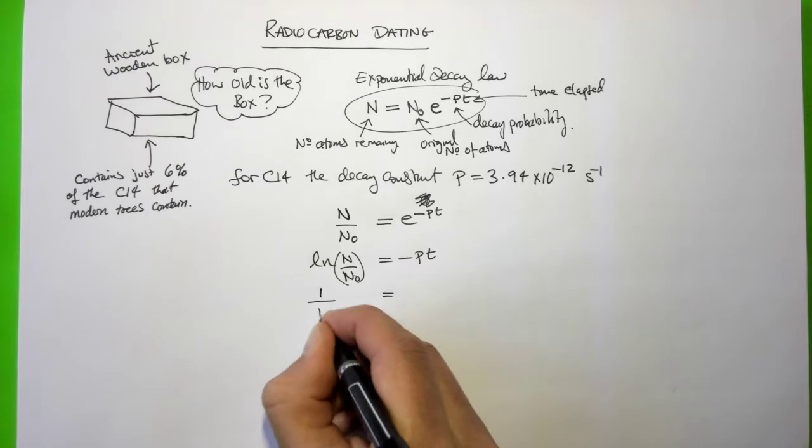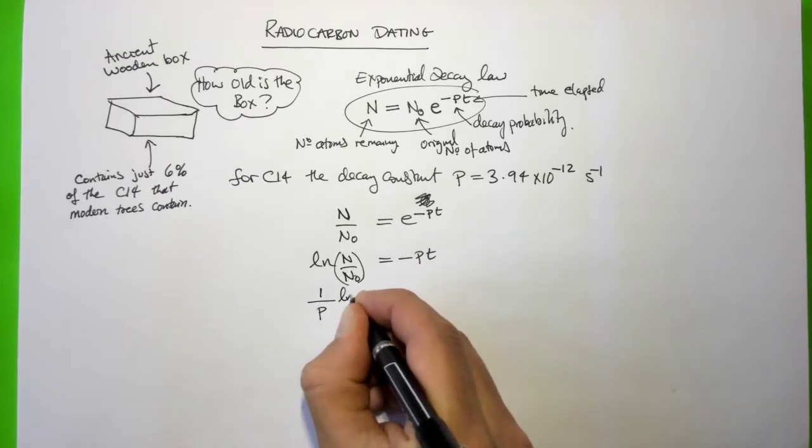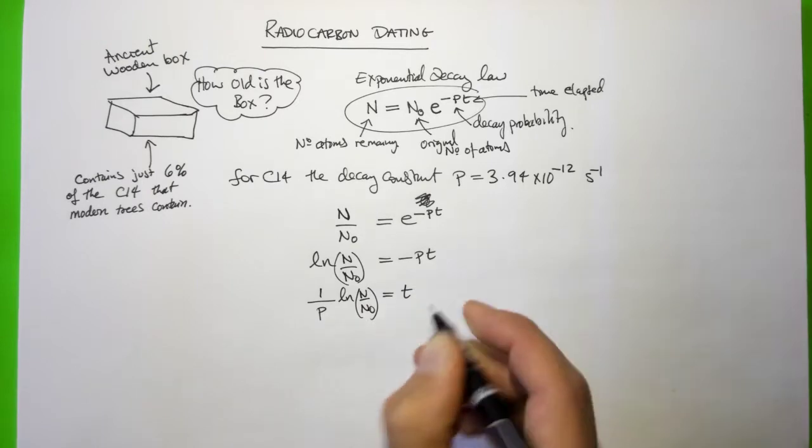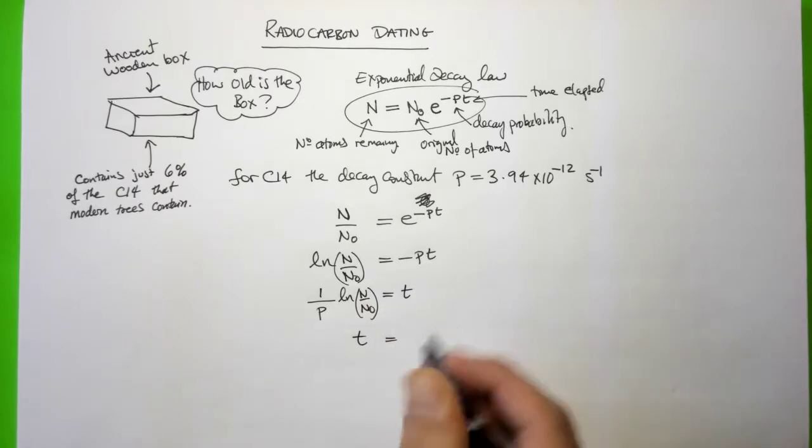And then we can rearrange a bit more. So we've got 1 over P times the natural log equals T. We can put it the other way round if you prefer. And then we can put in the numbers. So what is P? Let's put it in.